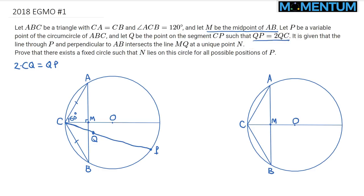It's given that the line through P perpendicular to AB intersects the line MQ at a unique point N. So first, let's go ahead and draw that perpendicular line. This is perpendicular, and I extend MQ here and let it intersect. Let me call this point as H, the foot of the projection of P onto the line AB, and this point here we label it as N.